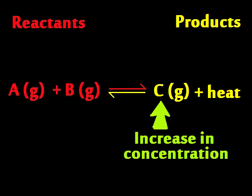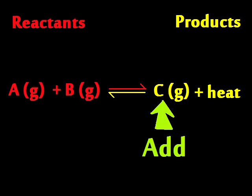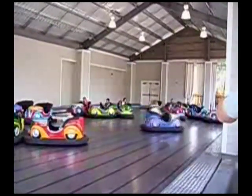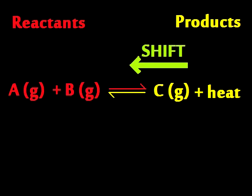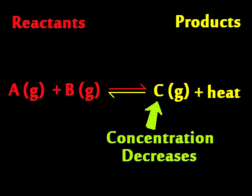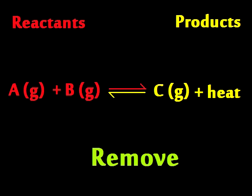If you add a product, collisions will improve. The shift is towards reactants side, and products are removed.